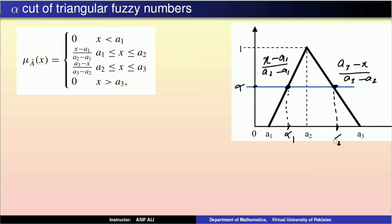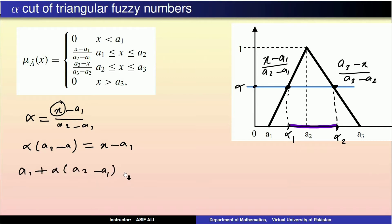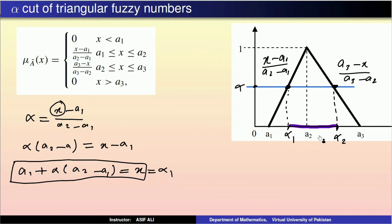یہ ہمارے پاس alpha_1 اور alpha_2 ہیں اور یہ جو interval ہے اس کو ہم alpha cut کہتے ہیں۔ Alpha is equal to (x − a1)/(a2 − a1) سے x solve کریں تو: alpha·(a2 − a1) = x − a1، یعنی x = a1 + alpha·(a2 − a1)۔ یہ ہماری alpha_1 کی value ہے۔